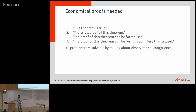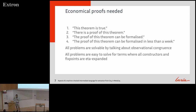All of the problems I mentioned before are solvable by talking about observational congruence and observational equivalence. We know the theorems are true and provable using standard techniques. However, all differences are in the end easy to solve for terms where all constructors and fixed points are eta-expanded. You don't pass around higher-order constructors — you always have them expanded with all their arguments. That's a weaker theorem, but it's still going to be fine.